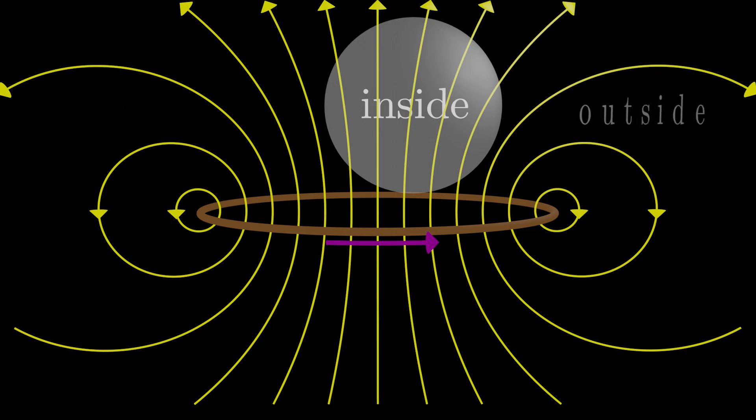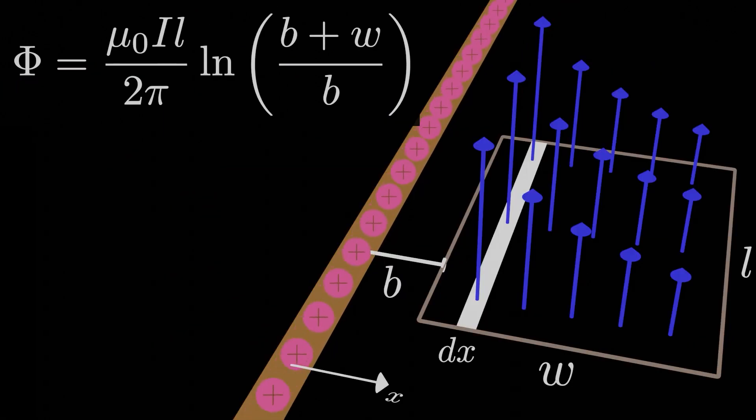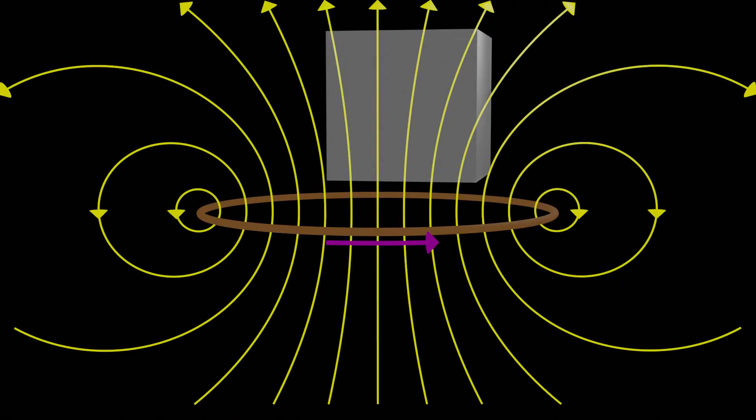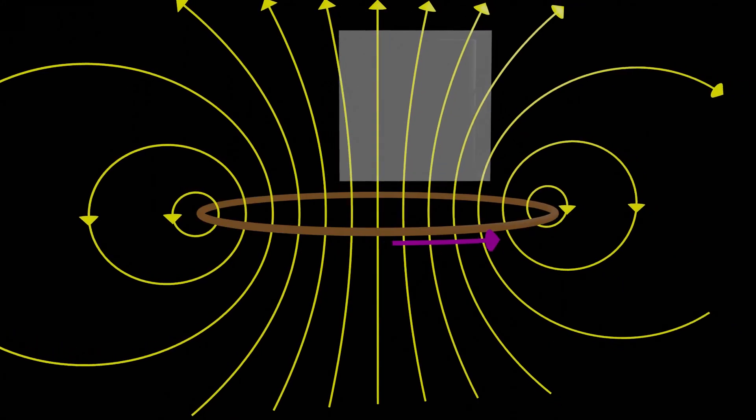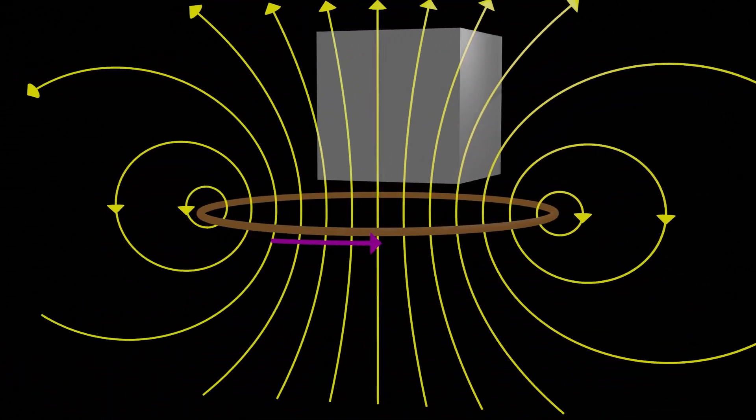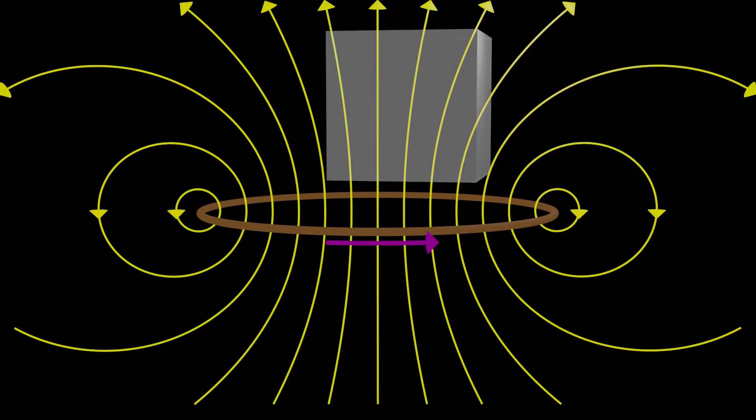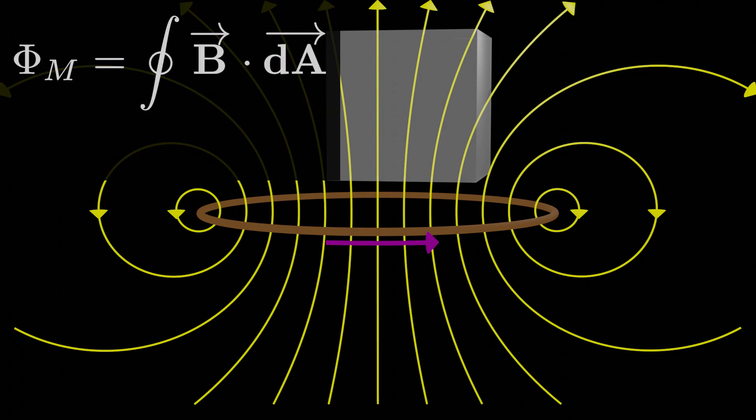That one didn't have either. It turns out, no matter what closed surface we choose, we'll never find one with a net magnetic flux going through it, current or no current. Now, all this wasn't exactly a proof, but as far as we know, the net magnetic flux through any closed surface in space is always equal to zero.